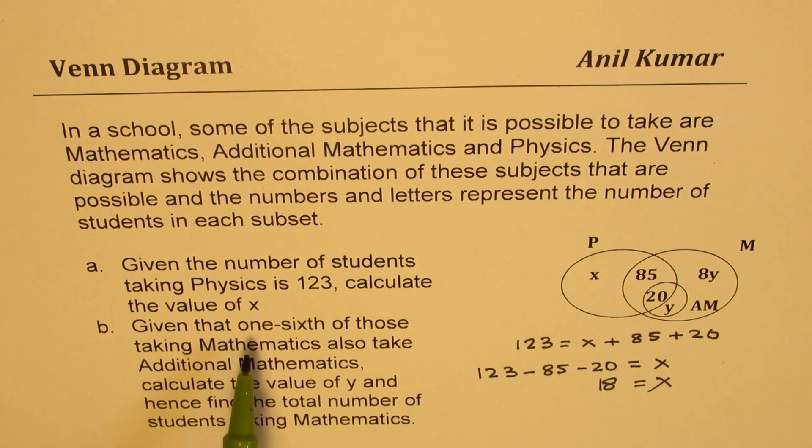So let's read the condition. Given that one sixth of those taking mathematics also take additional mathematics. So this number 20 plus y is one sixth of all who have taken mathematics, correct? So that is what it means.